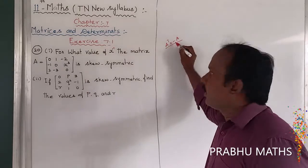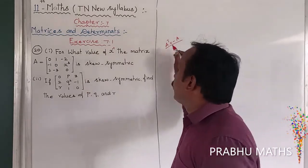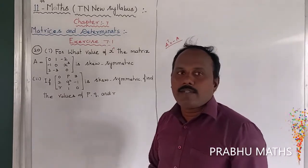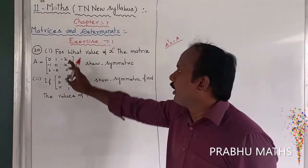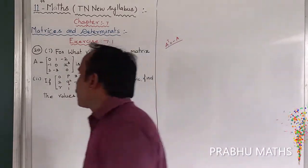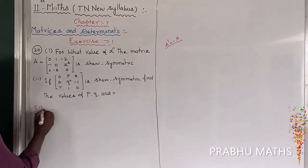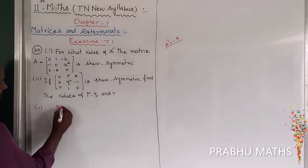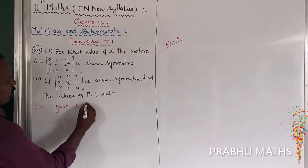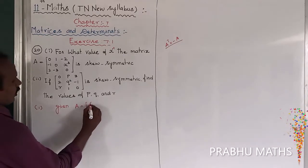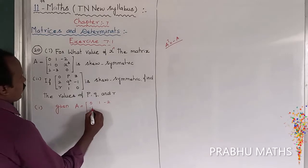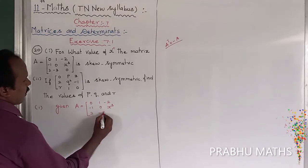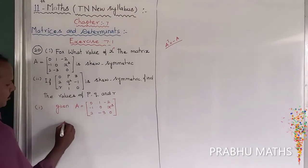The value of A is directly given. We find A transpose and then equate all the equal entries. First, let us take the given matrix: A is equal to the 3 by 3 matrix with entries 0, 1, minus 2 in the first row; minus 1, 0, X cubed in the second row; and 2, minus 3, 0 in the third row.